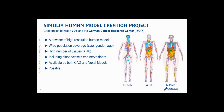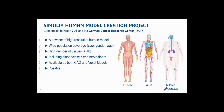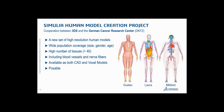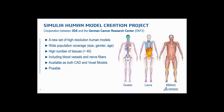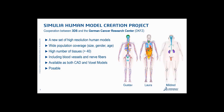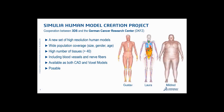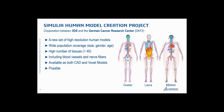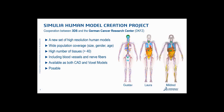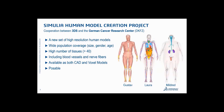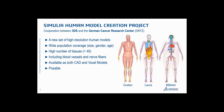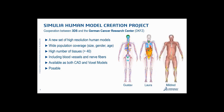The new models have a much better resolution than the models we had so far. In addition, the aim is to ensure wide population coverage in terms of size, gender, and age — really covering all kinds, from baby and child to adults, normal-shaped and larger individuals. The models also feature a high number of tissues: most models have more than 40 different tissues separated, including quite detailed models of blood vessels and nerve fibers as well.